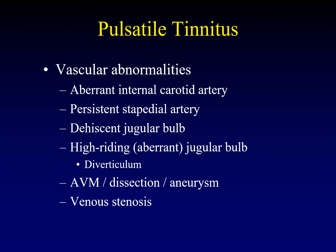What causes pulsatile tinnitus? The bottom line is that vascular abnormalities cause it. Examples include an aberrant internal carotid artery traversing the middle ear, a persistent stapedial artery, a dehiscent jugular bulb, a high-riding or aberrant jugular bulb usually with a diverticulum, arteriovenous malformations, dissections, aneurysms. Importantly, venous stenosis — venous outflow insufficiency — is a newly recognized and important source of pulsatile tinnitus, as it may reflect intracranial hypertension.